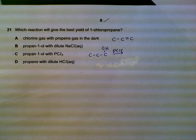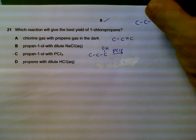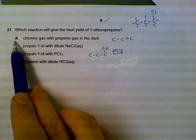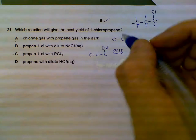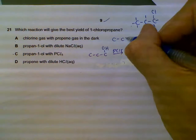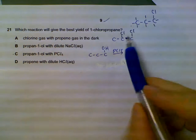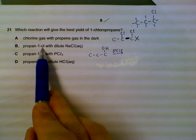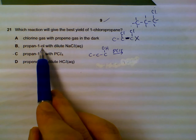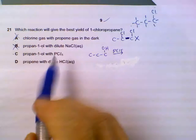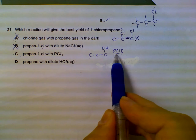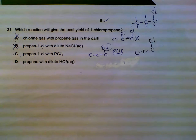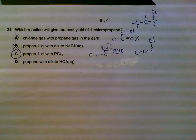Question 21: which reaction gives the best yield of 1-chloropropane? Drawing the structure — option A uses chlorine gas with propene. Since propene has a double bond, chlorine would add across the double bond, giving two chlorines rather than one, so this is out. Option B uses sodium chloride in aqueous solution, which won't replace the OH group effectively, so this is also out. Option C — propan-1-ol with PCl₅ — the PCl₅ replaces the hydroxyl group with chlorine, so C gives the best yield of 1-chloropropane.